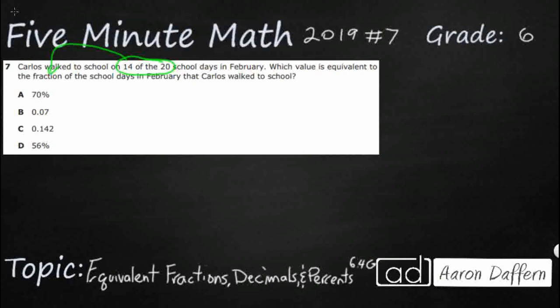First, let's make 14 twentieths into a decimal, so 14 out of 20. Well, we can just kind of flip that vertically and turn that into our fraction. So this is going to be our fraction, and we have got our numerator on top, denominator on bottom, so let's first go from a fraction to a decimal. Fraction to a decimal is the easiest thing to do.